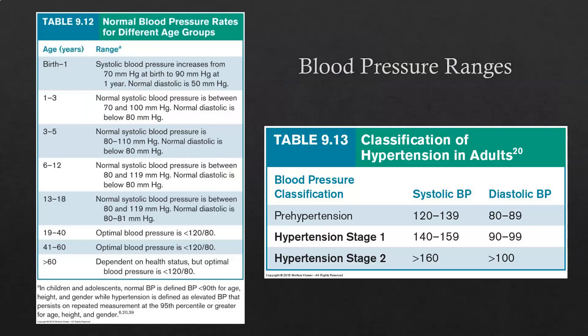Normal blood pressures are dependent on age. Other factors affecting readings include number and rate of respirations, emotional state, internal and external temperature, pain (which increases anxiety and blood pressure), the presence of the clinician, and patient race and health status. Understanding these baseline factors is important for accurate interpretation.